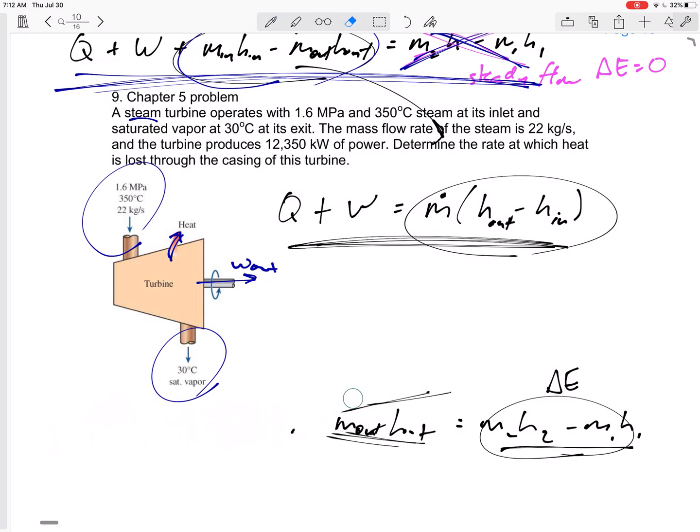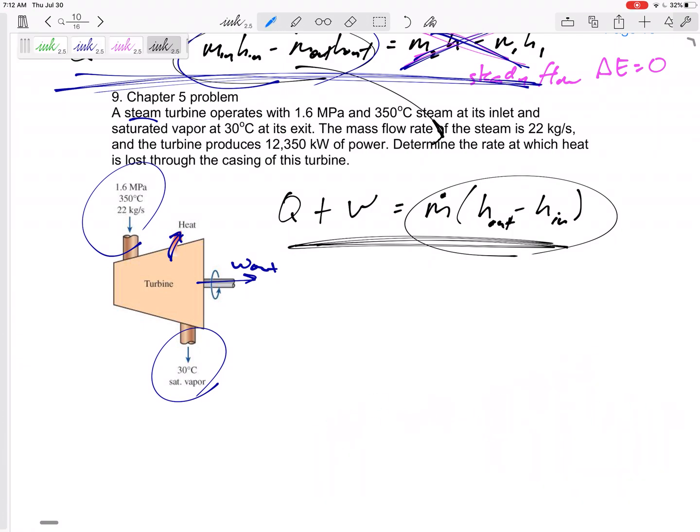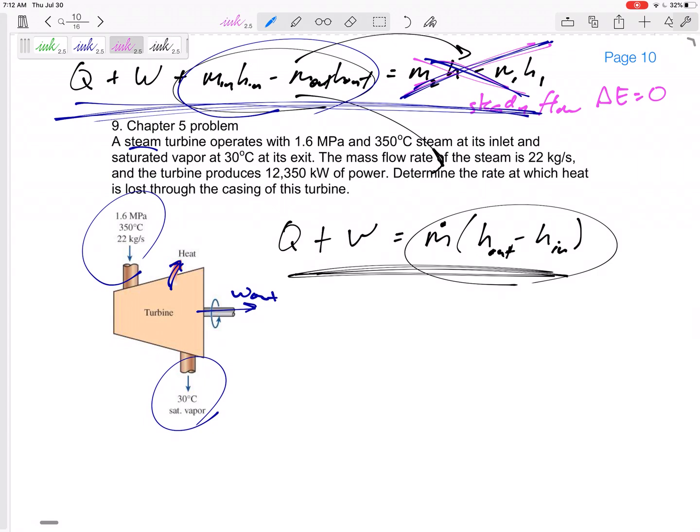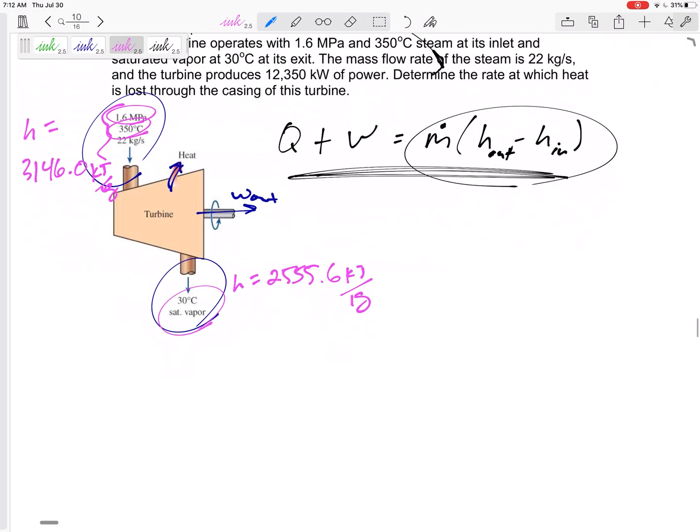Okay anyway, this is a steady flow device, here's our equation, Q plus W equals M dot H out H in. So I won't go through the property tables, but this is steam, H2O, at this pressure and that temperature, you should be able to tell it's H, you should be able to calculate it's H. So H, I've got 3146.0 kilojoules per kilogram. If it is a saturated vapor at that temperature, go to table A5, H is 2555.6 kilojoules per kilogram.